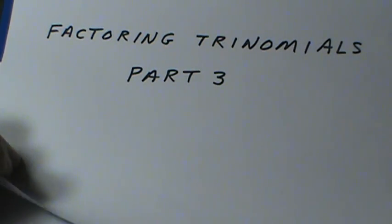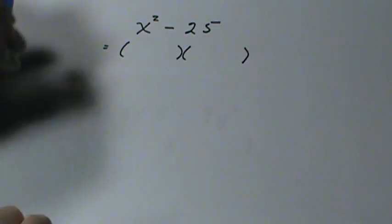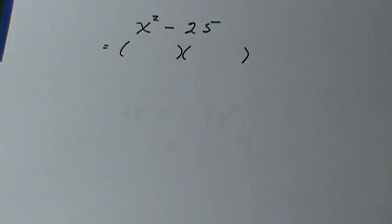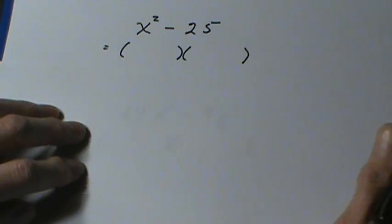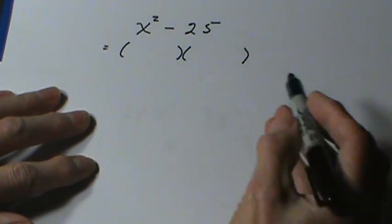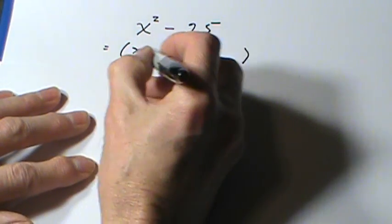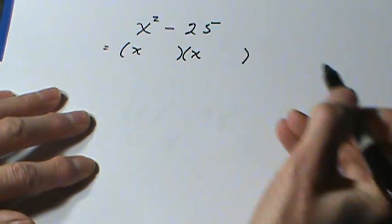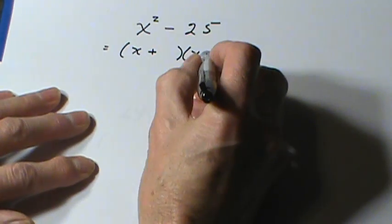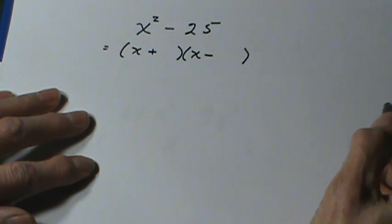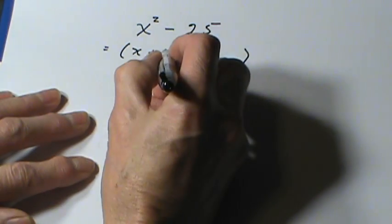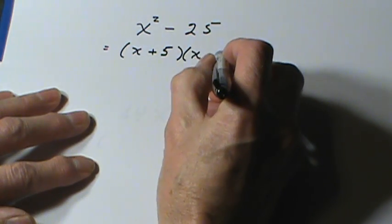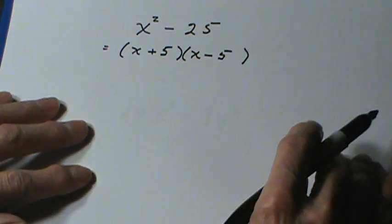In this video I'm looking at the special cases of factoring trinomials. Now this isn't really a trinomial, but it can be factored the same way as we did the others. The minus sign indicates that the signs in the brackets will be different. And I need factors of 25 with a difference of nothing, so we can just use the square root of 25, which is 5.